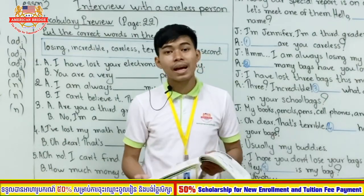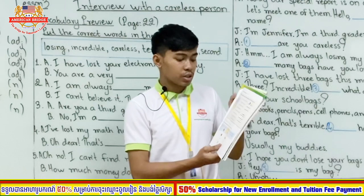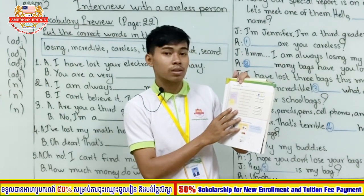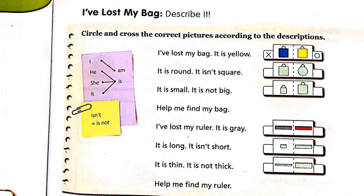Now let's go to page 19. You will see two exercises. The first one is very easy: circle and cross the correct pictures according to the descriptions. Look at the example: 'I've lost my bag and it is yellow.' So you circle the yellow bag and cross the blue bag — circle the correct picture, cross the incorrect one. Do this from 'I've lost my bag' until 'Help me find my ruler.'